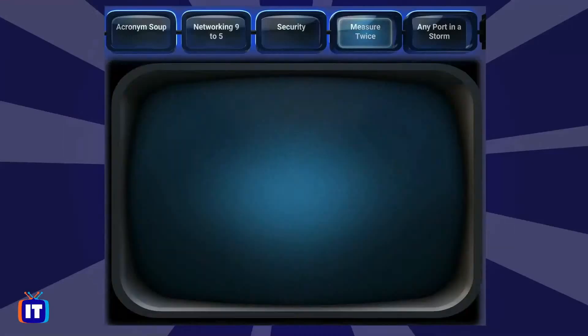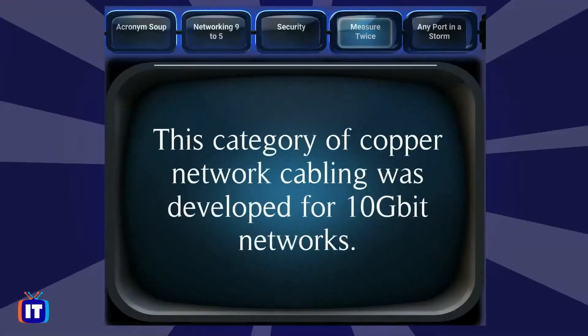Measure Twice for $200. This category of copper network cabling was developed for 10 gigabit networks. Wes answers: what is CAT 6A? The host accepts CAT 6A, noting CAT 6 was the intended answer.